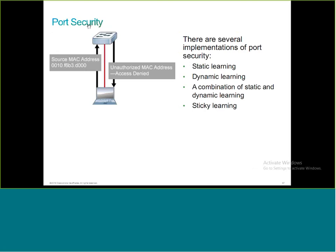Another type of security is port security. Port security ensures that only specific MAC addresses can be connected to a particular switch port. When you enable port security, only authorized MAC addresses are allowed on that switch port. There are different ways to learn MAC addresses: static learning — where you manually add the MAC address to the switch port — or dynamic learning, which is the default, where the switch automatically learns the connected device's MAC address.